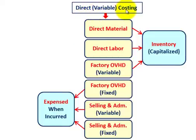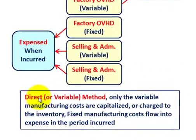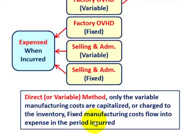For direct or variable costing, direct materials, direct labor, and the variable portion of factory overhead are charged and capitalized in inventory. The fixed portion of factory overhead and all selling and administrative expenses — both variable and fixed — are expensed when incurred. With the direct or variable method, only variable manufacturing costs are capitalized; fixed manufacturing costs flow to expense in the period they are incurred.